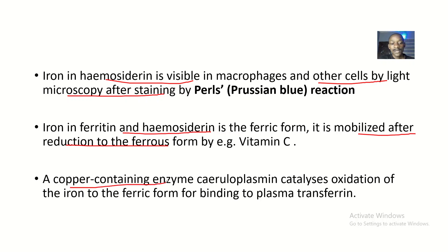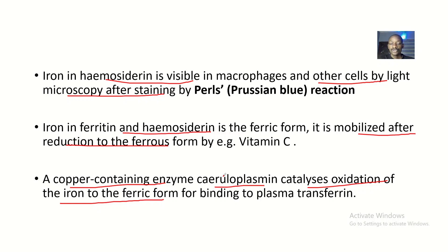A copper-containing enzyme known as ceruloplasmin catalyzes the oxidation of iron to the ferric form for binding to plasma transferrin. So when iron is converted to the ferrous form (Fe²⁺) and there is a need for it to be converted back to Fe³⁺, it has to be oxidized, and the enzyme that catalyzes this reaction is ceruloplasmin.